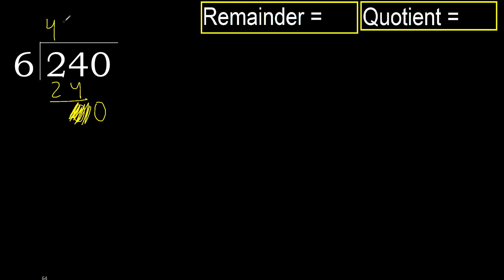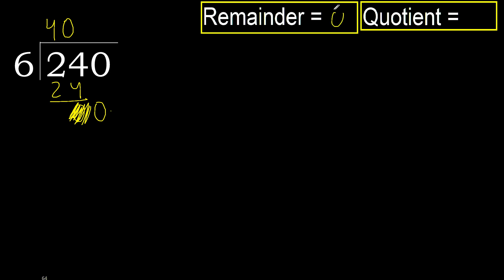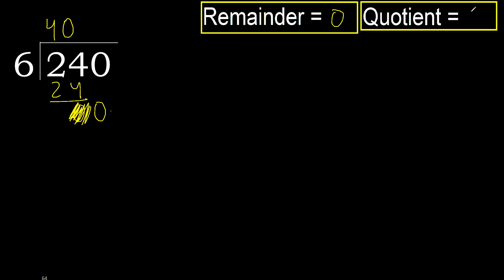Therefore complete. Always complete with 0, because here we finish it with this number. 240 divided by 6 is here.